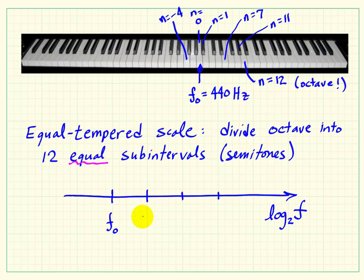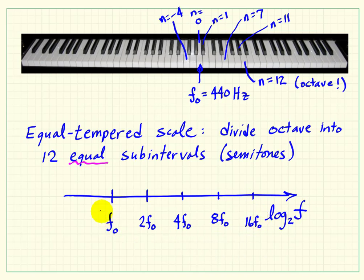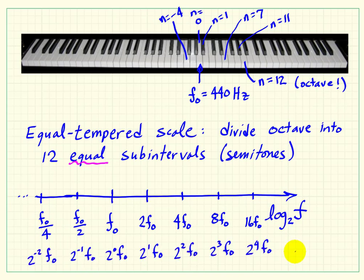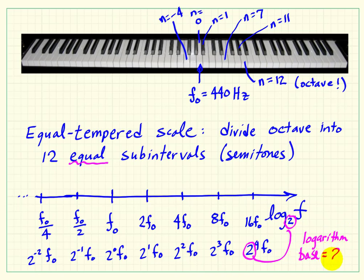If we plot frequencies on a log base 2 scale — chosen to match our two-to-one ratio — then an equal distance traversed along the axis always corresponds to one octave. Even going the other direction to F0 over 2, that equal distance is still one octave. Each of these scale factors can be represented as a power of 2, which is why we use the base 2 logarithm — it corresponds to our fundamental choice of the octave interval.